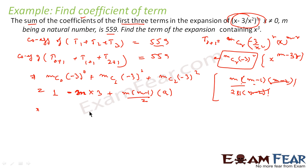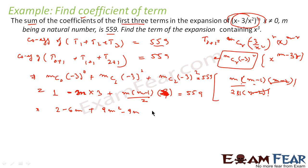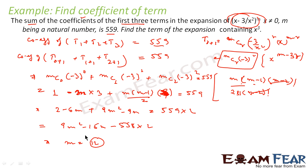So we solve the equation: 1 - 3m + 9m(m-1)/2 = 559. Multiplying through, this gives 9m² - 15m - 558·2 = 0, which simplifies to 9m² - 15m - 558 = 0. Solving this equation, we get m = 12. That is the value of m.